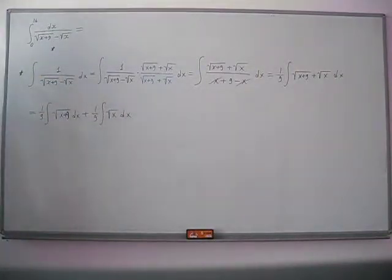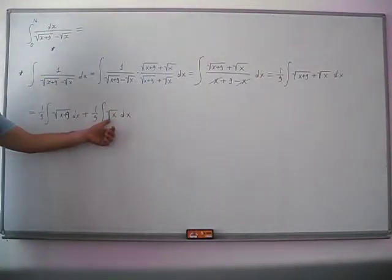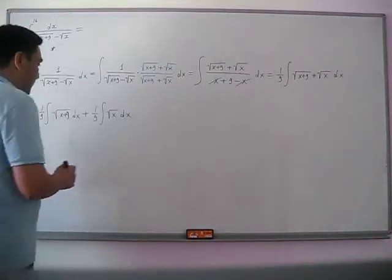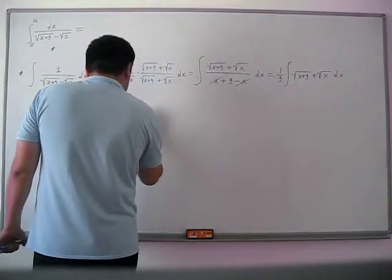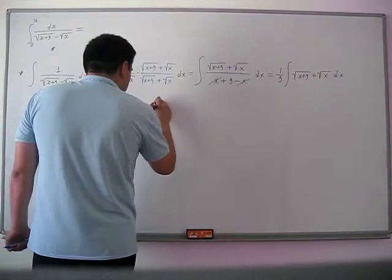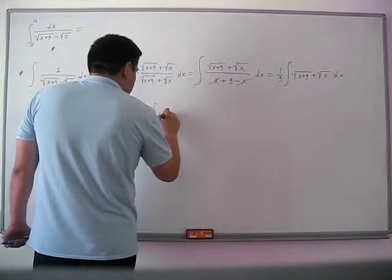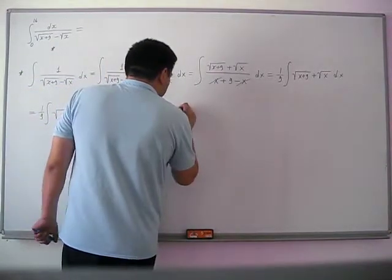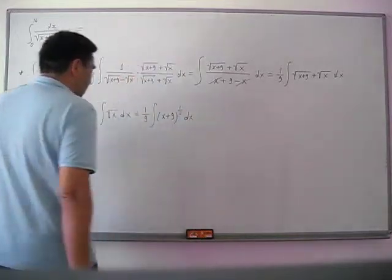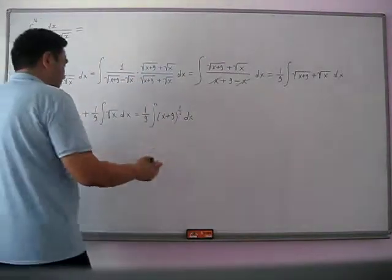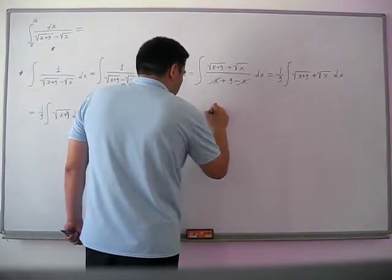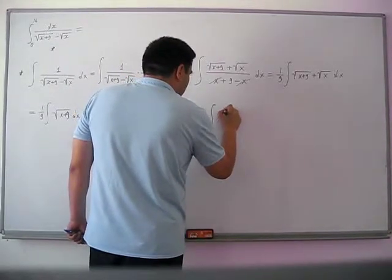To make it easier to integrate, we rewrite the square roots as powers. The first integral becomes (1/9) integral of (x+9) to the power 1/2 dx. The second integral similarly becomes (1/9) integral of x to the power 1/2 dx.